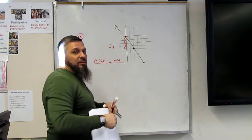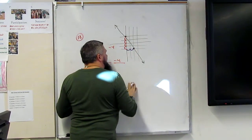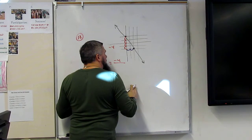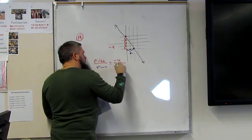Then we're going to do run, right? And the run is how much? 2. Positive or negative? Oh. Positive. Good. Okay, so the run is a positive 2.